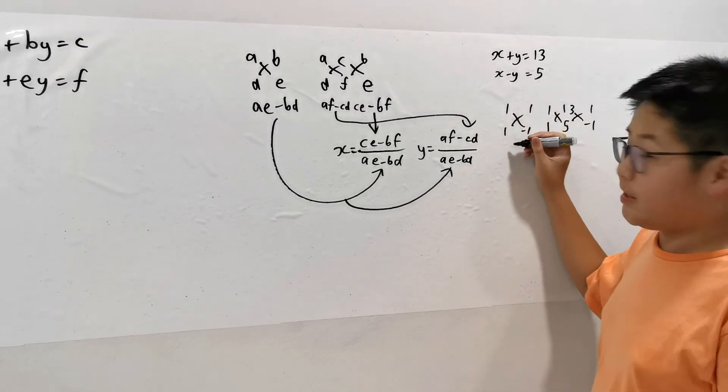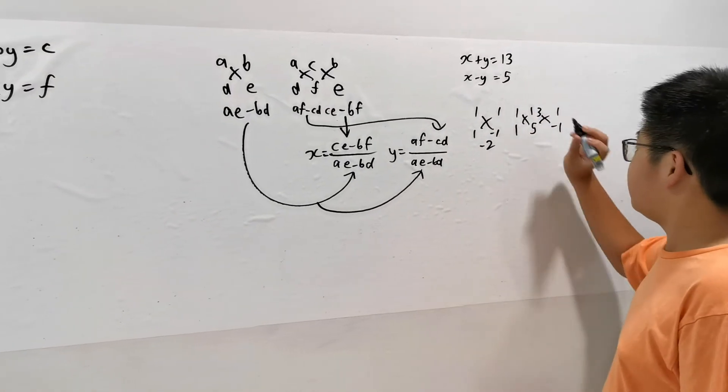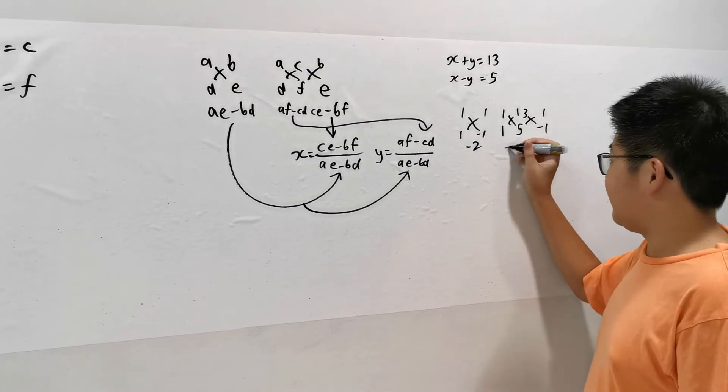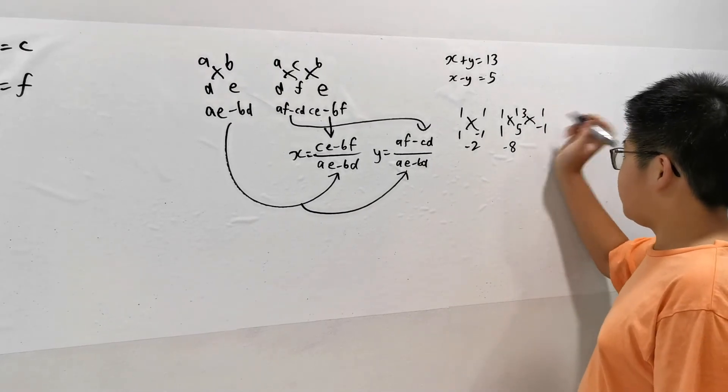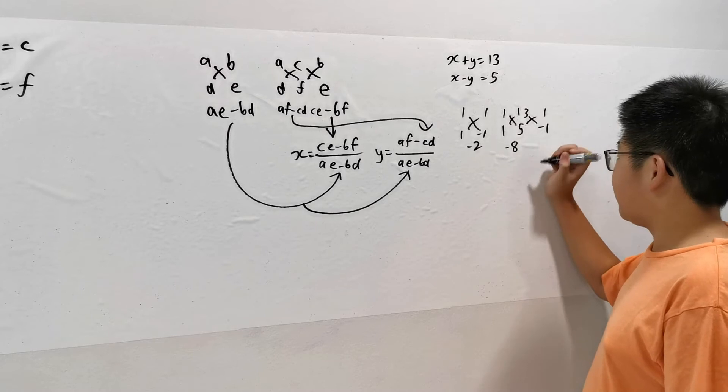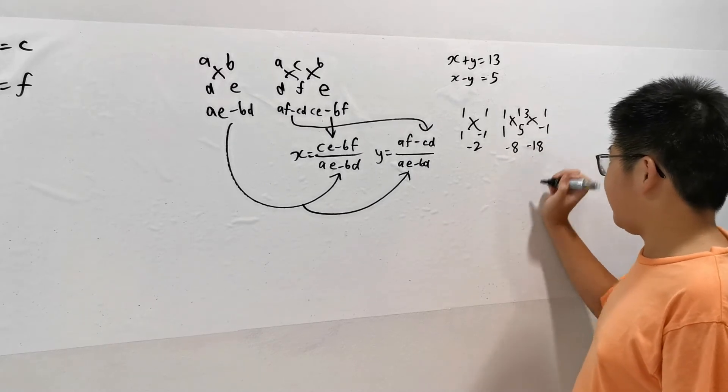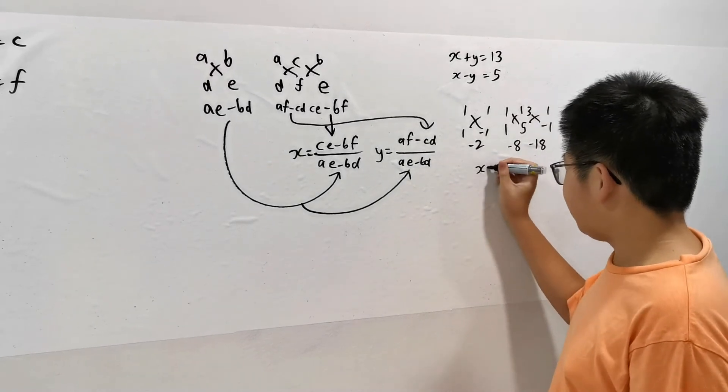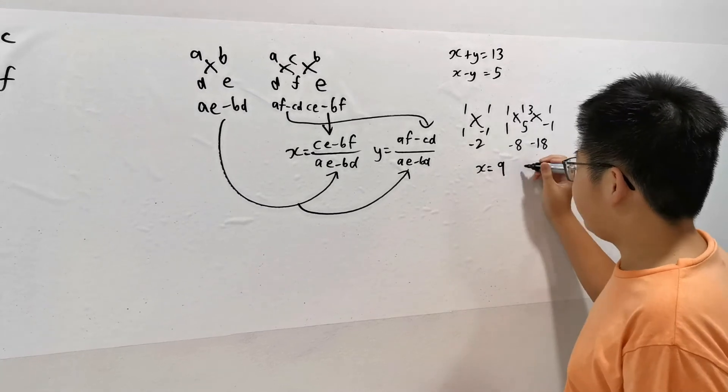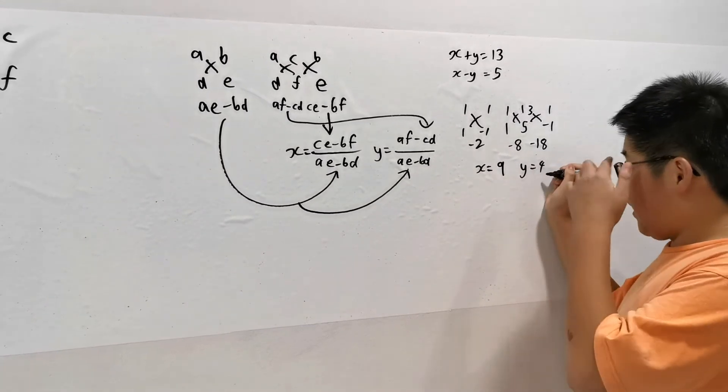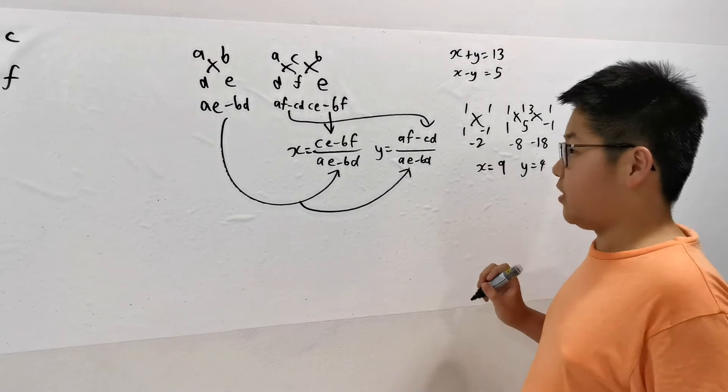See, this shoelace product is negative 2. This shoelace product, negative 8. This shoelace product, 13 minus 1 plus minus 18. Then we have X equals negative 18 over negative 2 equals 9. And Y equals 4. If you substitute them in, you'll get those equations.